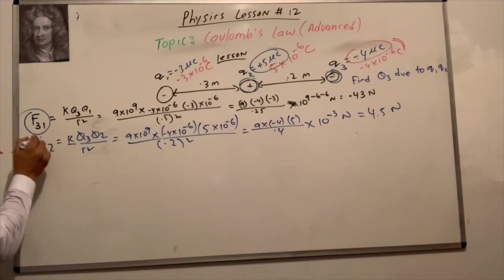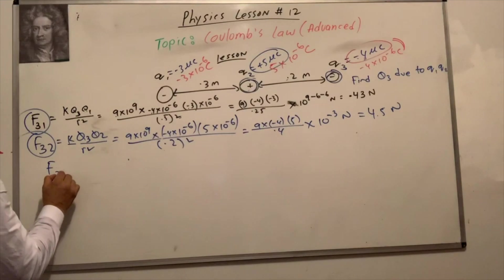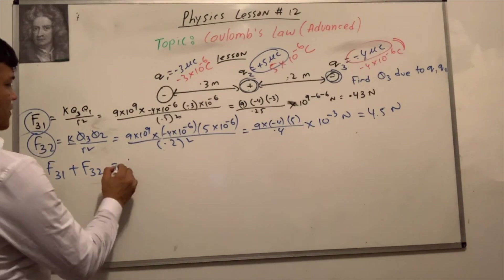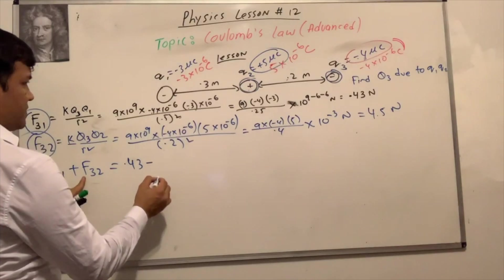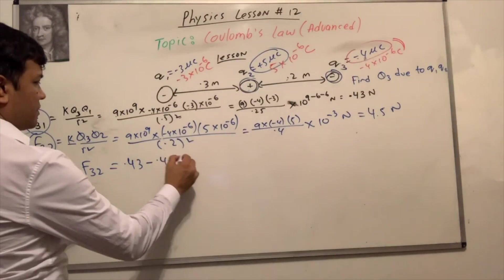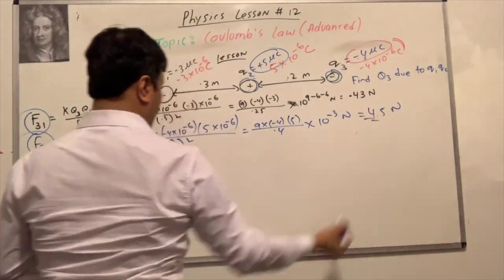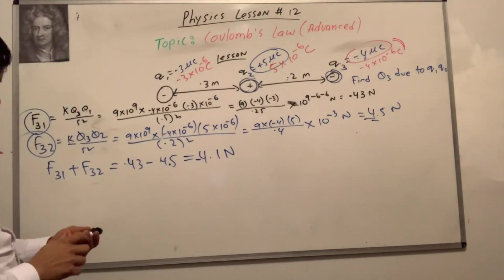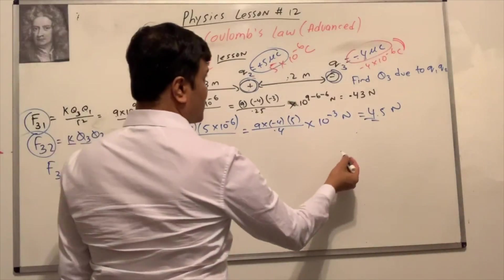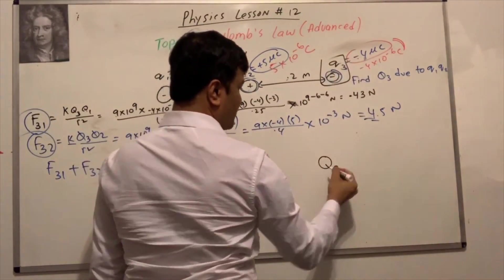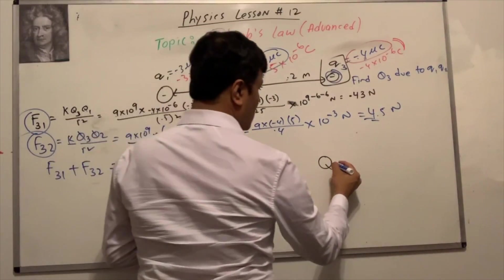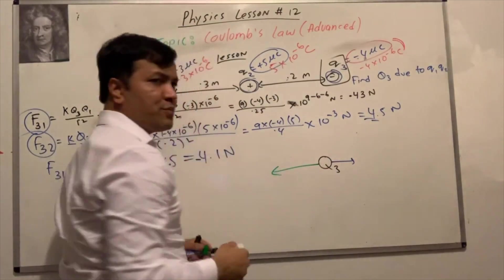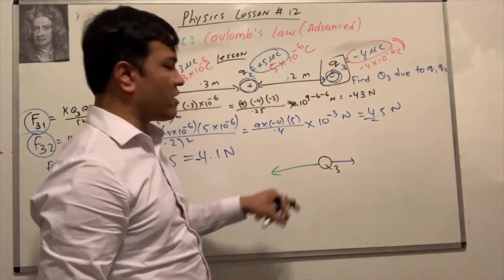So we have F31 and F32. F31 plus F32 equals 0.43 minus 4.5, which is approximately negative 4.1 Newton. Now for q3, I'm going to draw a blue line representing F31 and a green line representing F32. Pause the video and write the magnitude of the blue line and the green line.